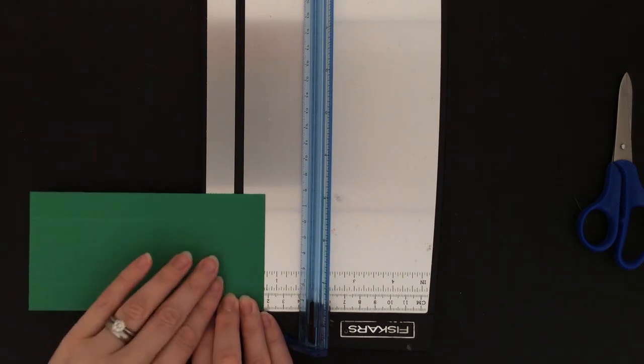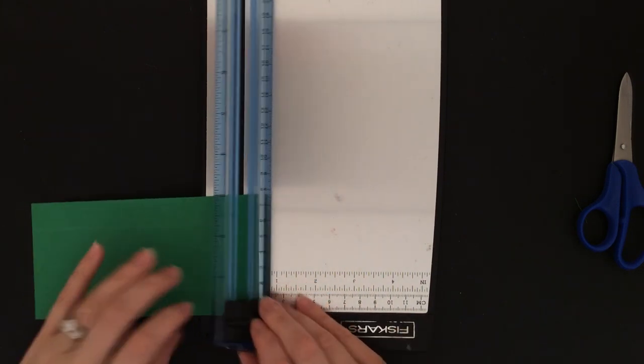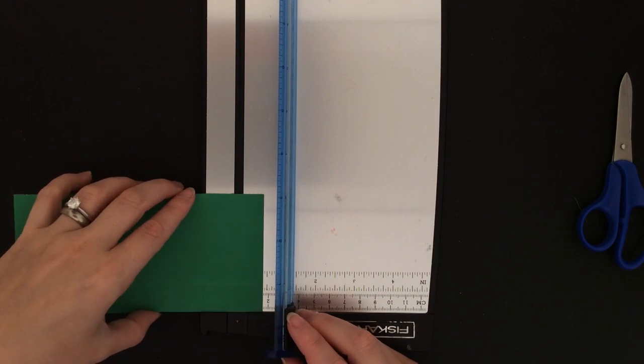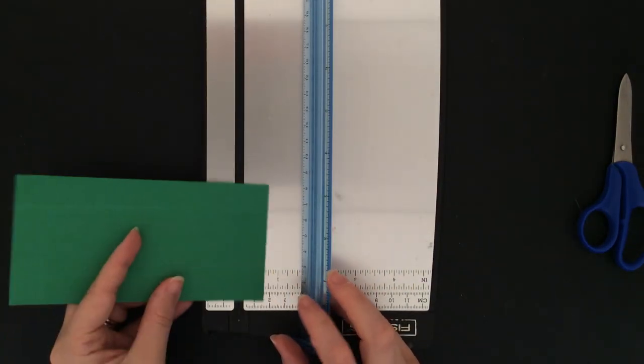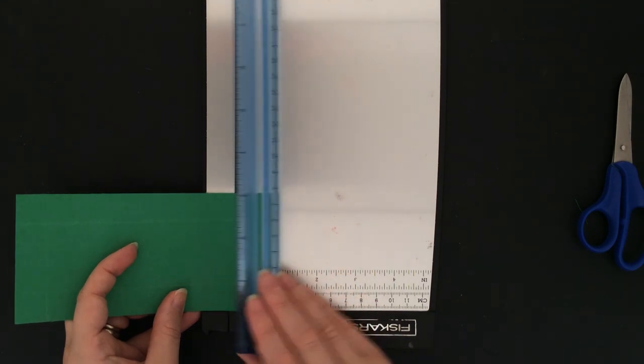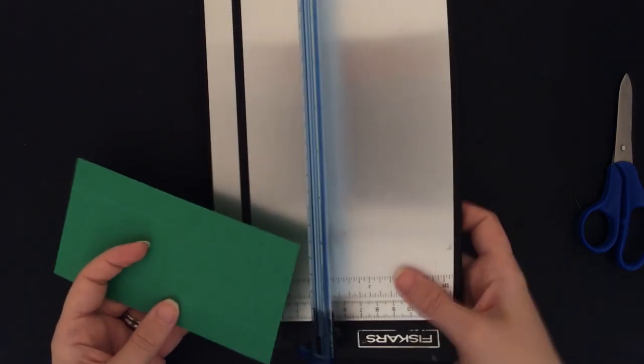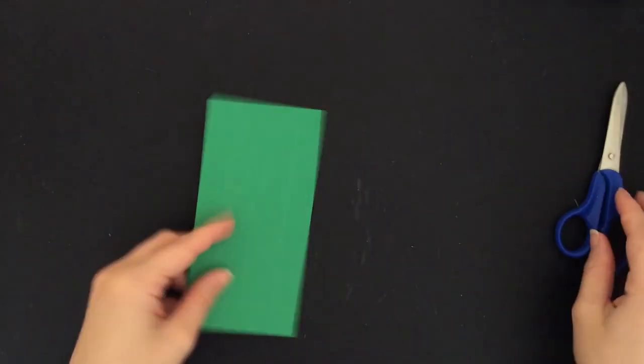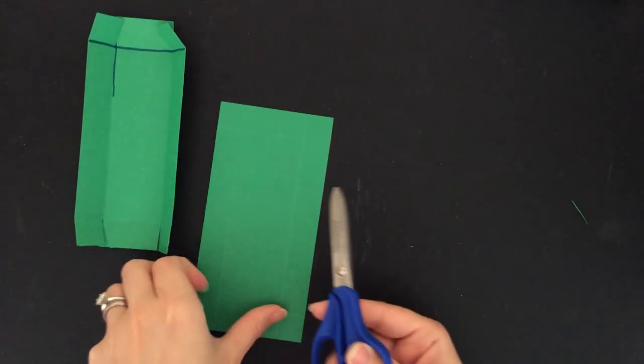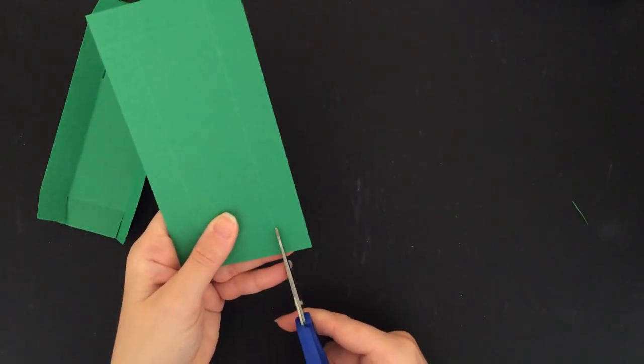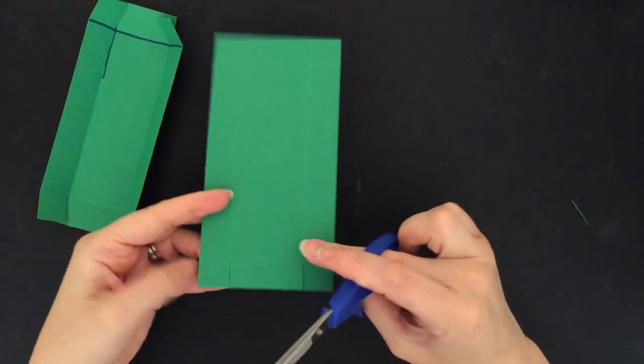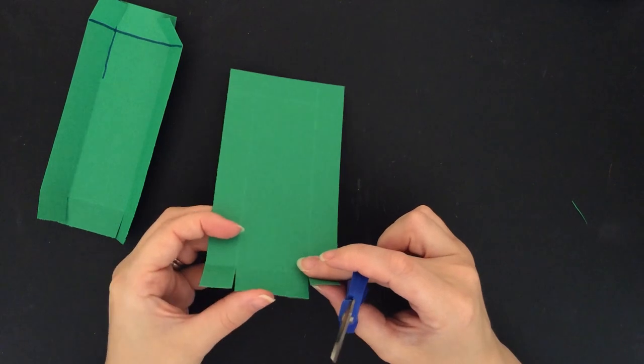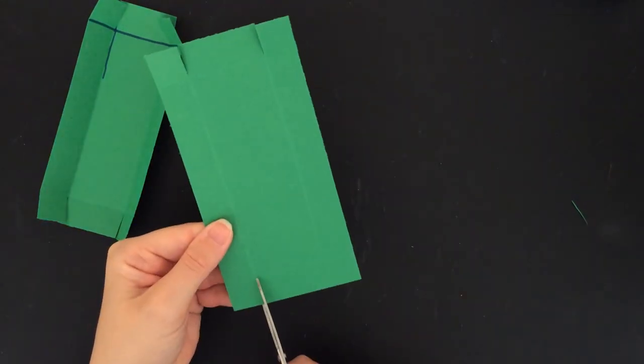And again, the same just as you did with the bottom. Only instead of three quarters, you're doing it at eleven sixteenths. Okay, now, this works identical to the way the bottom did. You're just going to cut in to create little outside tabs and a middle tab on both ends of the box.